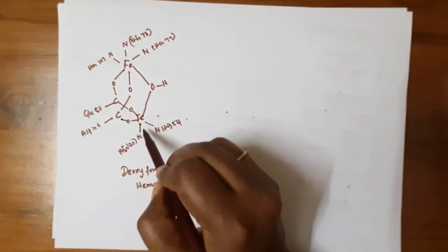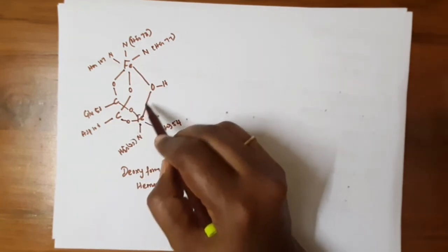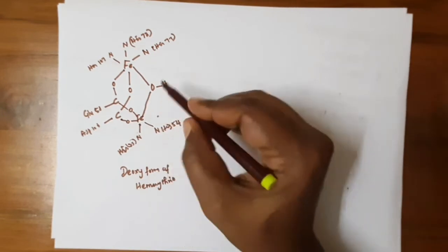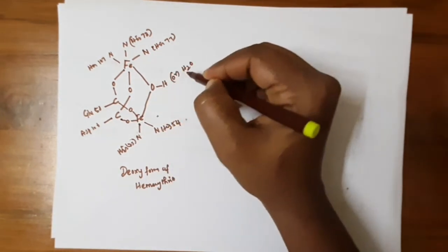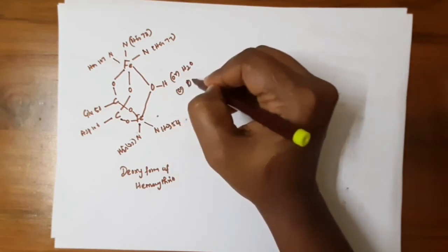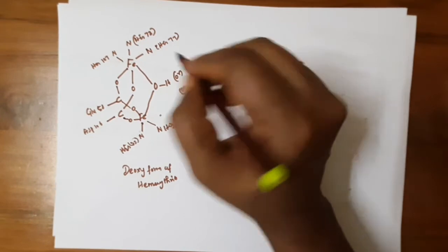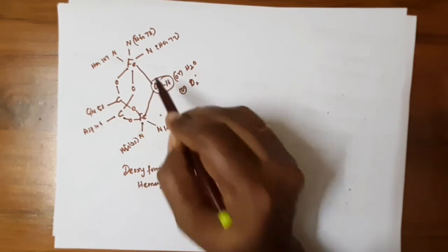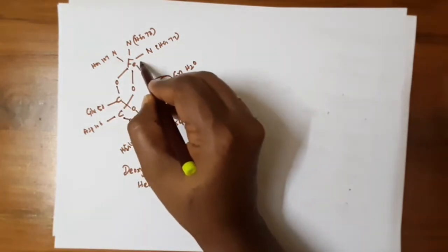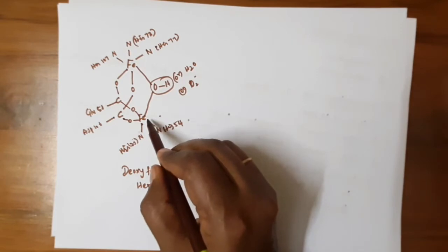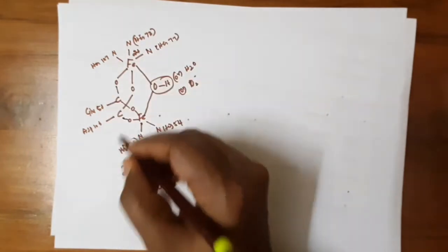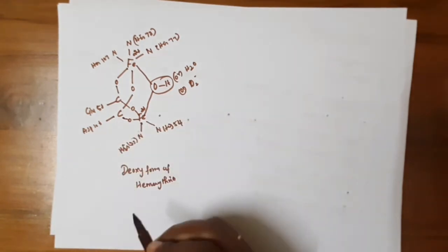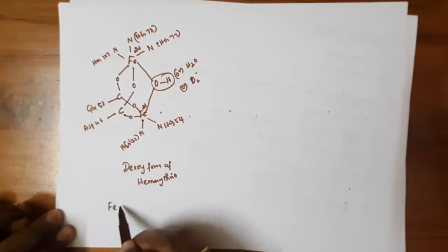The second iron atom is coordinated with only two histidine residues instead of three. Additionally, the two iron atoms are coupled antiferromagnetically with hydroxyl groups — it can coordinate with either hydroxo or water, and possibly peroxo groups. In the deoxy form, one iron atom is in a six-coordinate site and the other is in a five-coordinate site. Both iron atoms are in the +2 oxidation state, with one in a distorted octahedral environment.